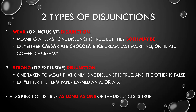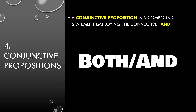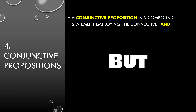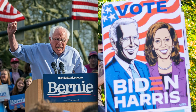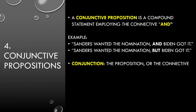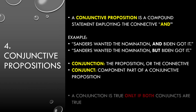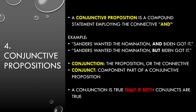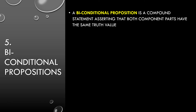A conjunctive proposition is a compound statement employing the connective 'and' or 'both…and.' Sometimes 'but' can take the place of 'and.' For example: 'Bernie Sanders wanted the nomination and Joe Biden got it' — or 'Bernie Sanders wanted the nomination but Joe Biden got it' — they mean exactly the same thing. A conjunction refers either to the proposition as a whole or the connective itself. A conjunct is a component part located on either side of 'and.' A conjunction is true only if both conjuncts are true.